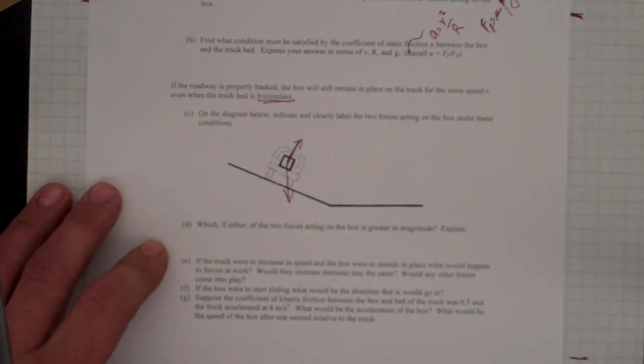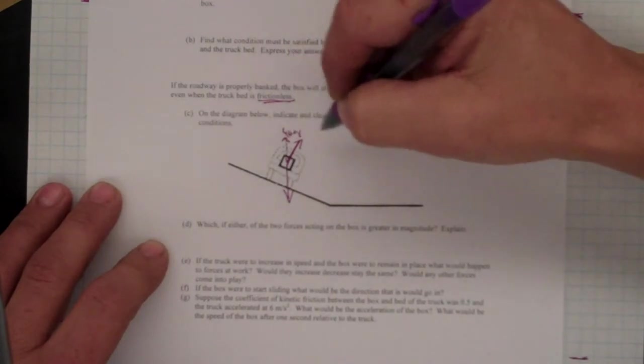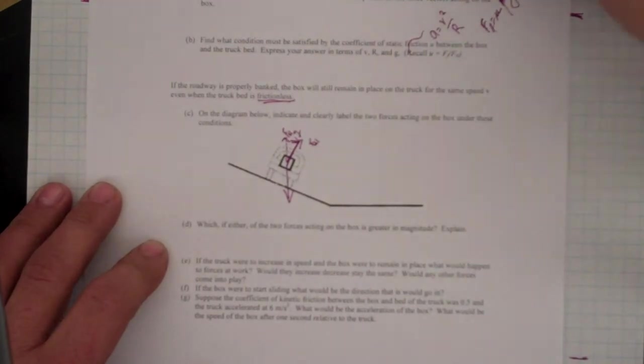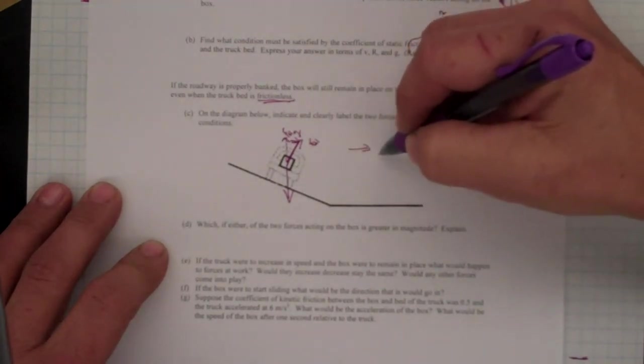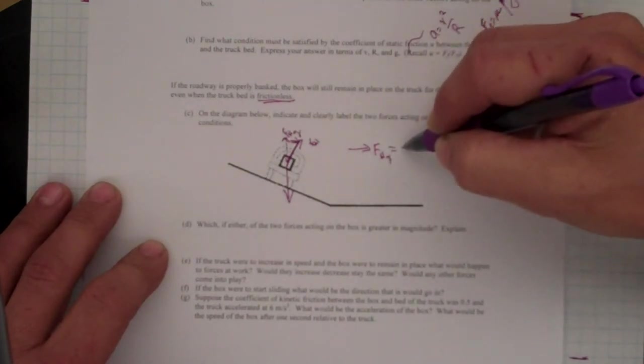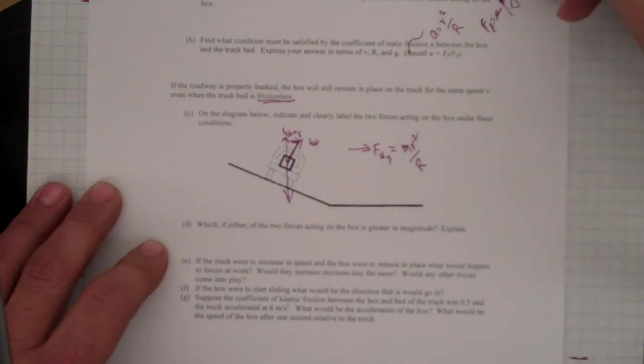And the cool thing here is that the inward-directed force comes from that normal force. So if I look here, there's a component, we'll call it F normal, in the y direction, this is F normal. But there's also a force in this direction, F normal in the x direction, and that's going to be the one that gives us our mv squared over r.